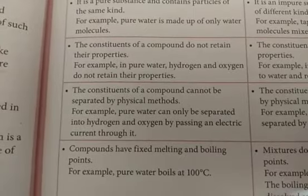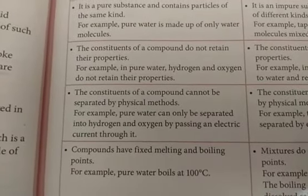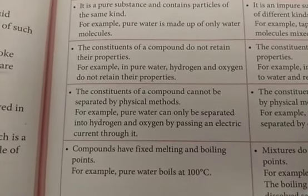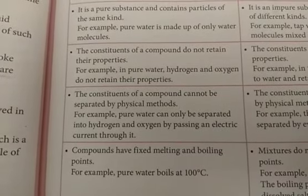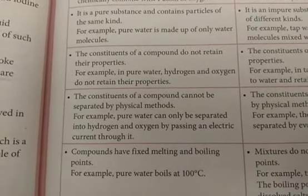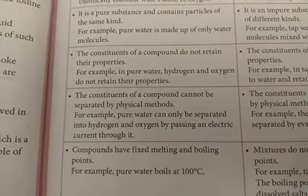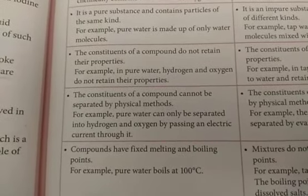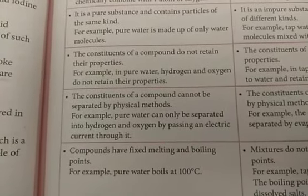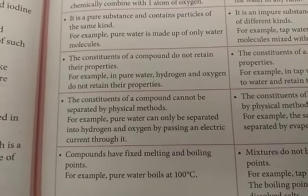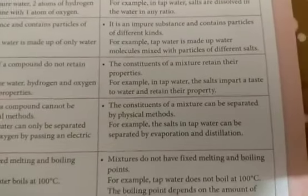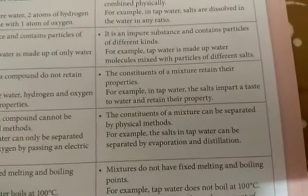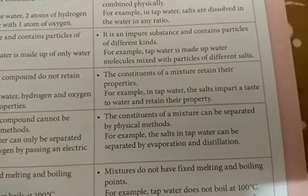The constituents of a compound cannot be separated by physical methods. For example, pure water can only be separated into hydrogen and oxygen by passing an electric current through it. You cannot break the bond between hydrogen and oxygen in water unless you apply chemical forces such as electric current.